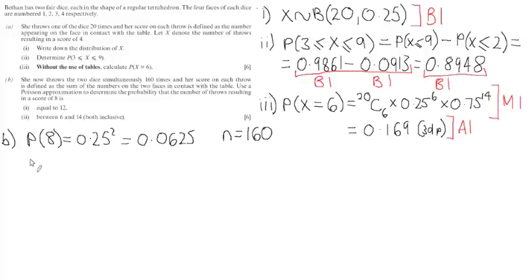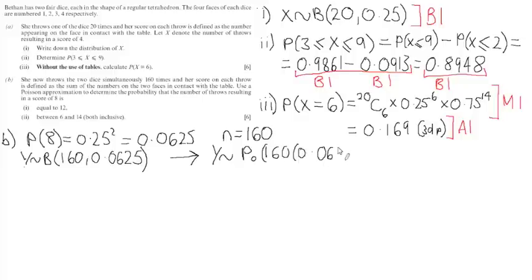If we take Y as being the number of successes, Y would be distributed binomially with n=160 and p=0.0625. This is then approximated using the Poisson distribution with a mean of np, so 160 times 0.0625. Therefore Y is distributed Poisson with mean 10. Remember it's important at the beginning that we define our distribution to make it clear what we're intending to do. There's method marks going to be awarded for this.